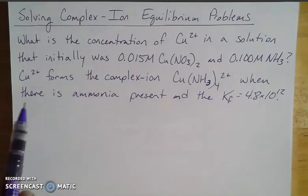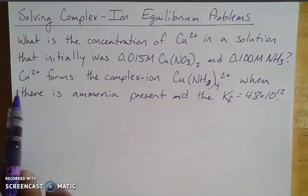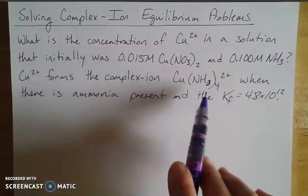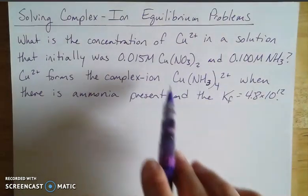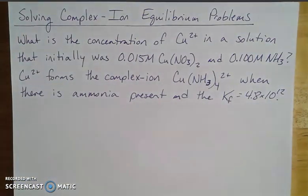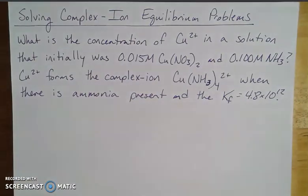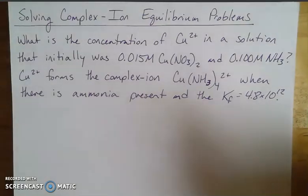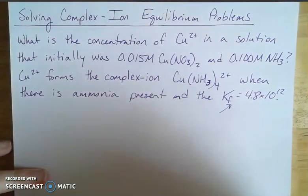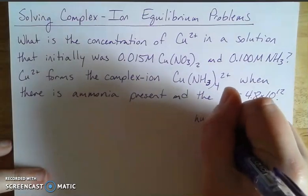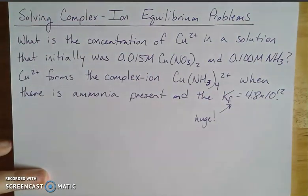The next piece of information here is about the complex ion part. So copper 2+ likes to form this copper ammonia complex ion Cu(NH3)4^2+ when there's any ammonia present. And well, how much does it like to do that? In order to figure that out, we need to look at the K value. So the Kf of formation tells you information about how much this ion likes to be this ion. And in this case, because this number is so large, this number is huge.